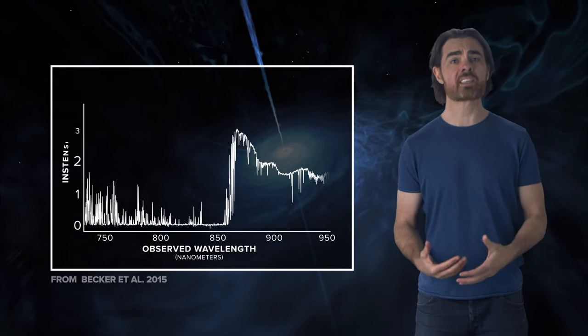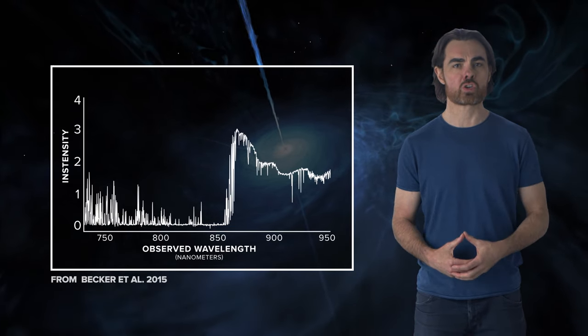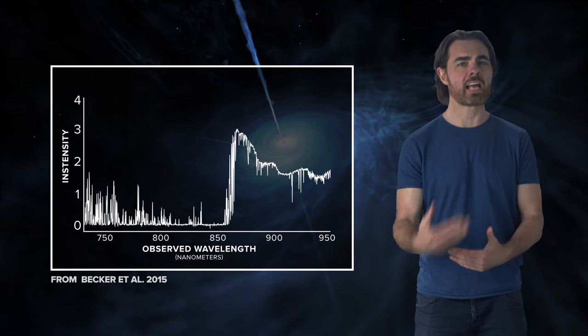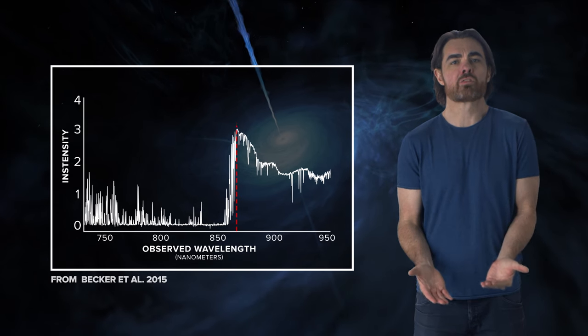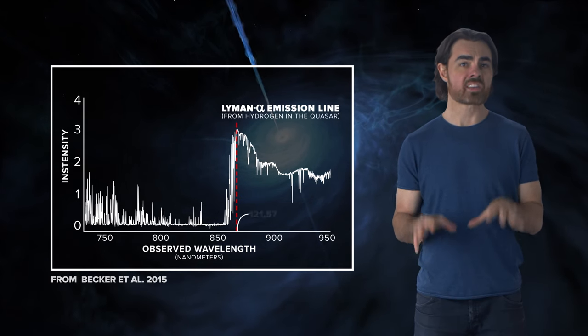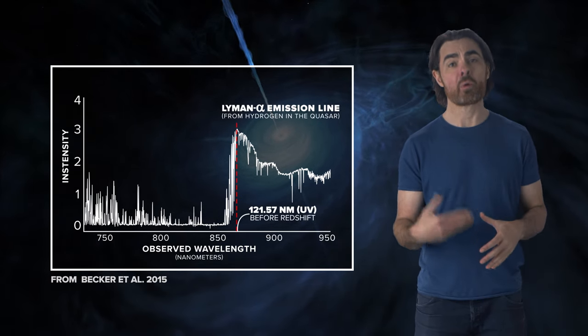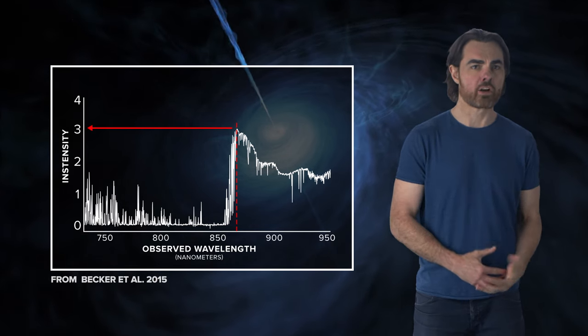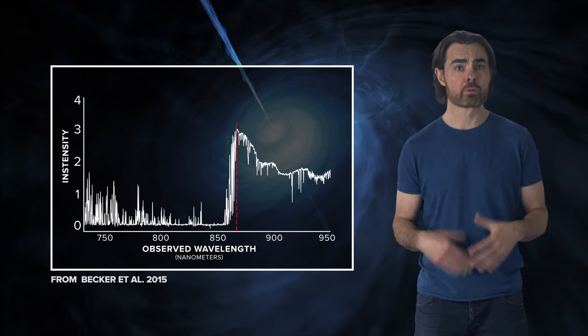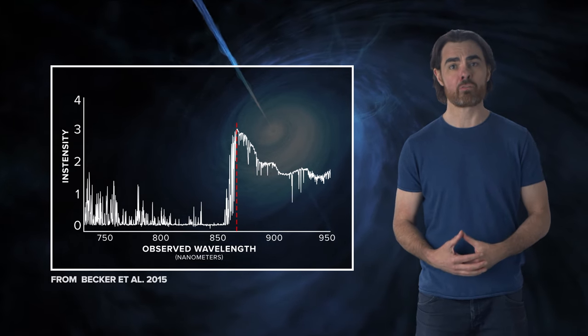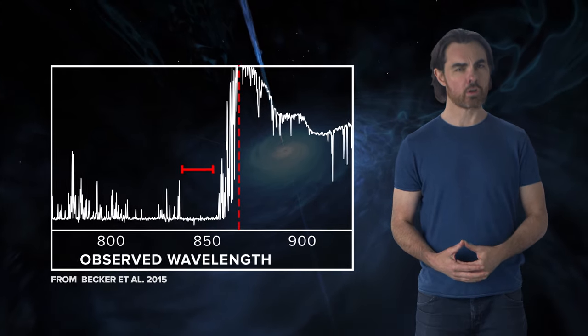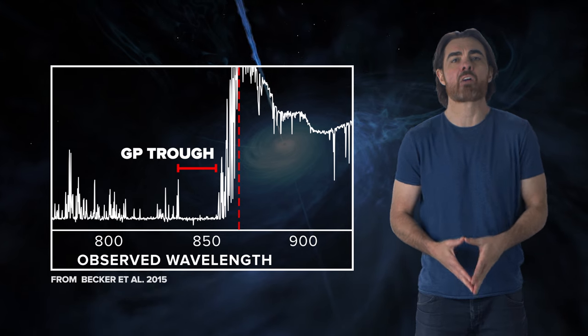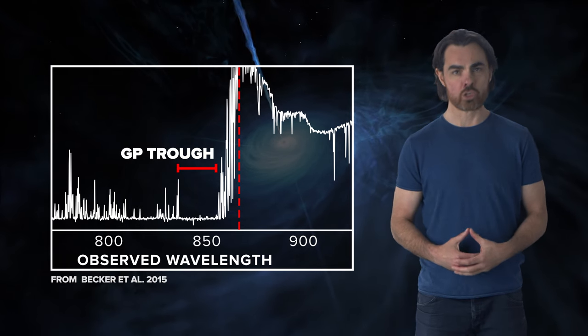This is the spectrum of a quasar from the epoch of reionization. All of this light comes from the material falling into the black hole, or being blasted back out again. This is the redshifted Lyman alpha wavelength, once hard ultraviolet, now infrared. Everything to the left of this point was once even more energetic ultraviolet. But now it's gone. It was redshifted through the deadly Lyman alpha wavelength on its way to us. This is the so-called Gunn-Peterson trough, seen only in quasars that are embedded in the early neutral universe.